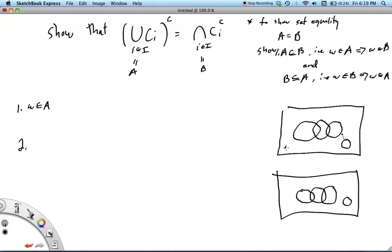So, for instance, this point would be in A, this point would be in A, this point would be in A, this point would not be in A. So we're talking about the complement of the union of all of the sets.